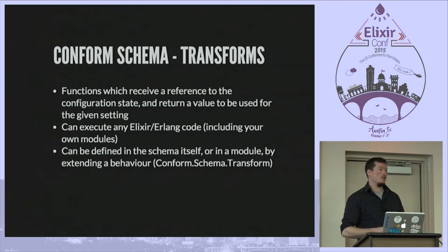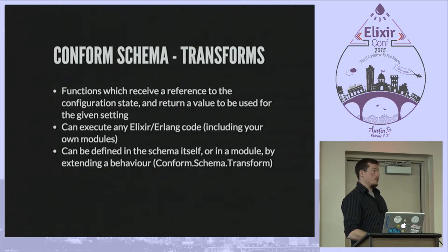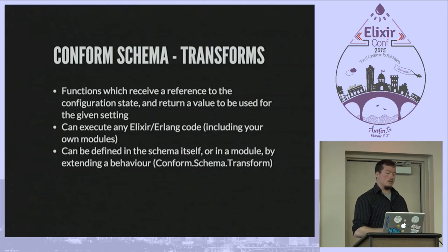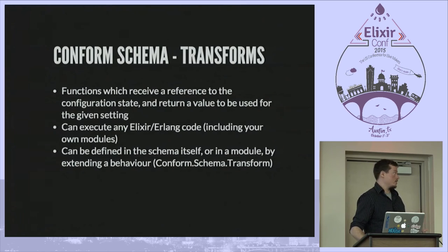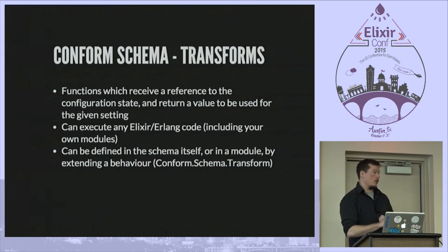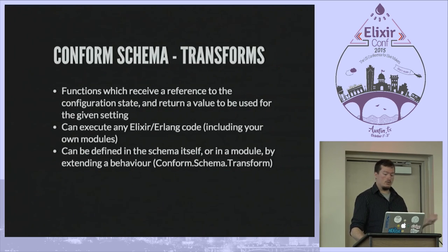Transforms are simple functions. They take a single parameter — a reference to the current configuration state — and allow you to query that state so you can combine settings, modify existing ones, and so on. It provides a query syntax based on wildcards. It can execute any Elixir code, so it's an ideal place to do things like read from the environment or read from a file. You can get machine-specific information about the target system when this configuration is evaluated — which, when used with releases, happens on start, upgrade, and downgrade. You can also package transforms into modules that implement a behavior, keeping your schema file simple with just mappings and referencing those modules.